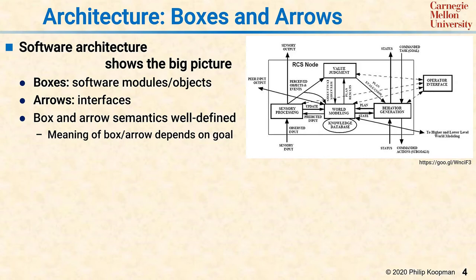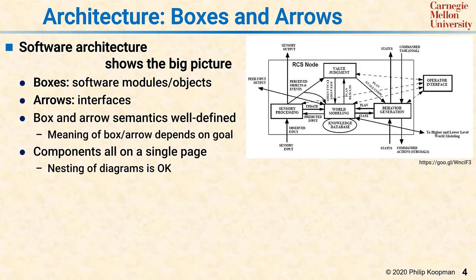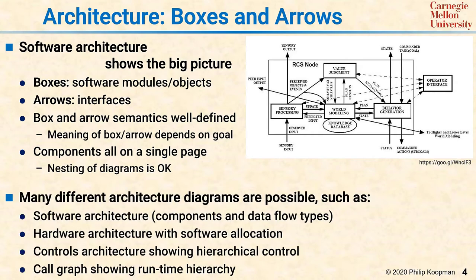Typically, a good architecture diagram has all the big ideas on a single letter-sized sheet of paper with readable font. If there's too much to put on one page, then you need to define subsystems and encapsulate the complexity inside one box on the top-level diagram, and then have another diagram nested below that goes into more detail on that subsystem box.